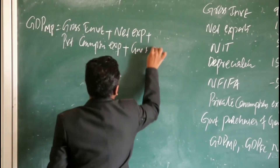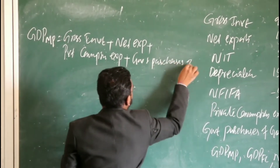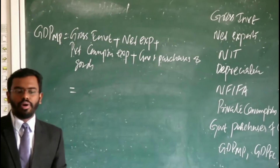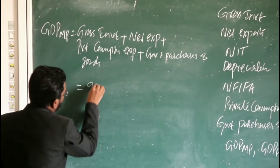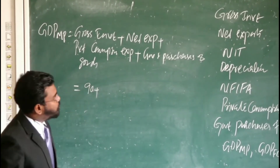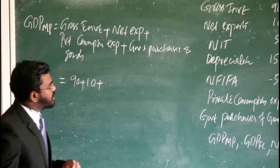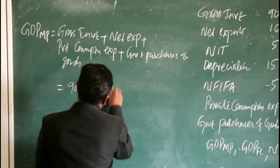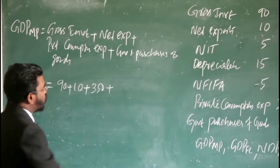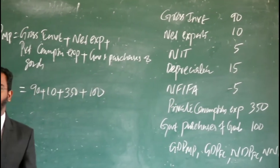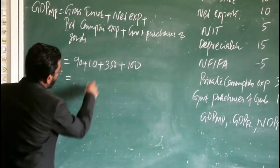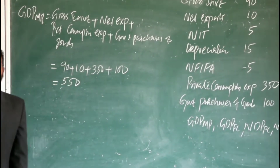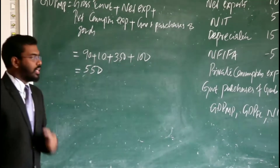So GDPMP equals gross investment 90, plus net export 10, plus private consumption expenditure 350, plus government purchases of goods 100. So we will get 550. So 550 is our GDPMP.